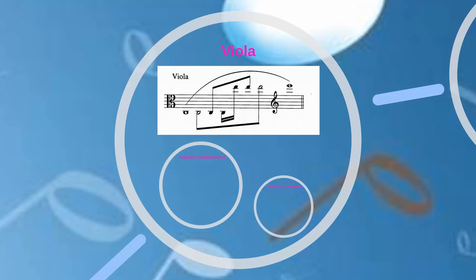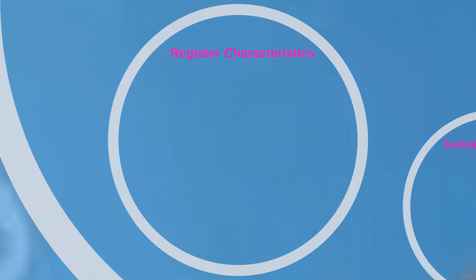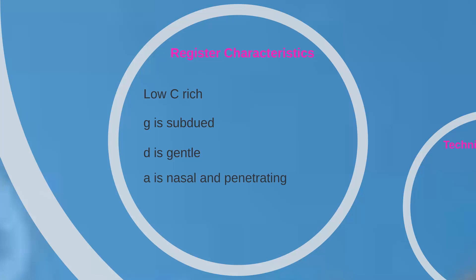The viola is normally written in the alto clef, except for the upper register, where it shifts to the treble clef to avoid ledger lines. The alto clef should be used for all passages that don't involve more than two or three ledger lines. Players are accustomed to parts that shift from clef to clef, but you should try not to use more than one clef per measure. The individual tone colors of the four strings make the primary distinction in sound on the viola. The low C is rich and thick, the G above that is subdued, the D above that more gentle, and the A becomes a bit nasal and penetrating, becoming increasingly bright as you ascend.